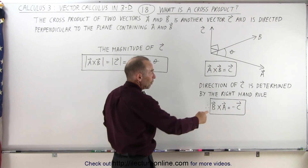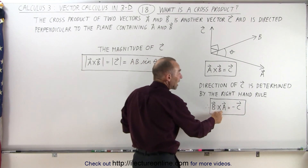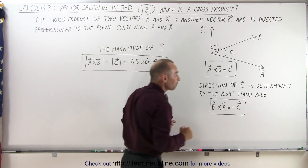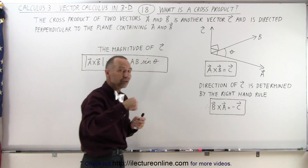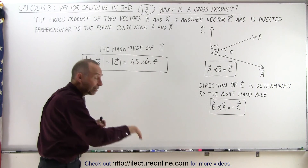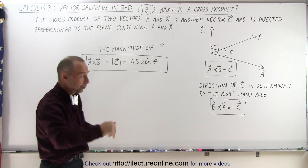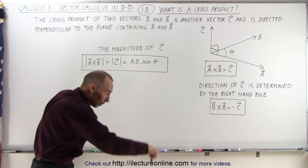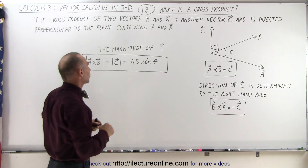Therefore, B cross A is equal to negative C — the other direction of C. It's still perpendicular to the plane, but now pointing in the opposite direction.